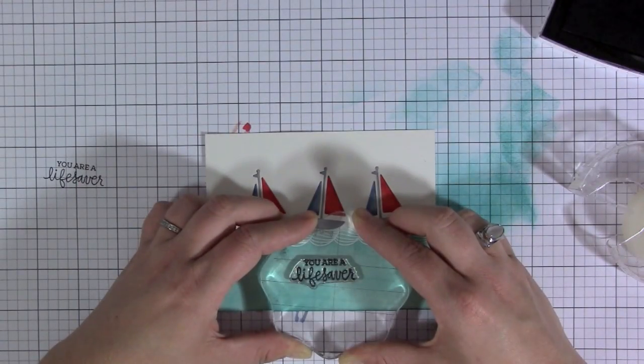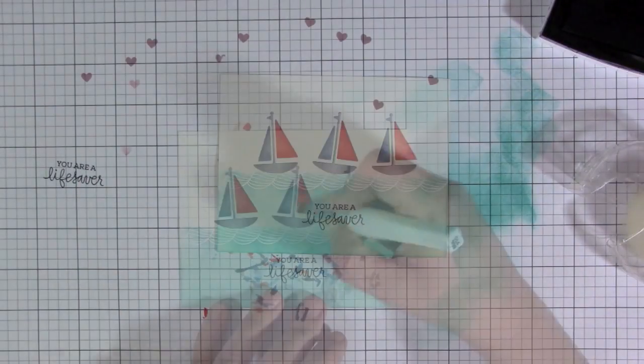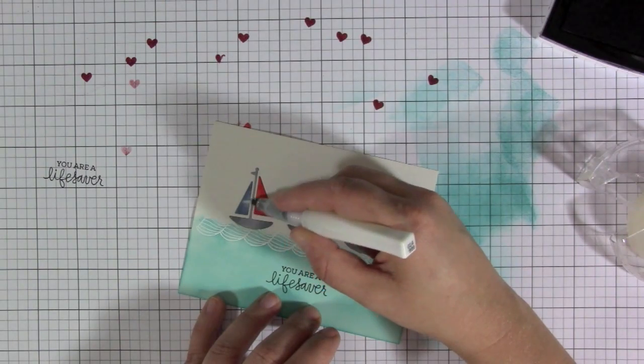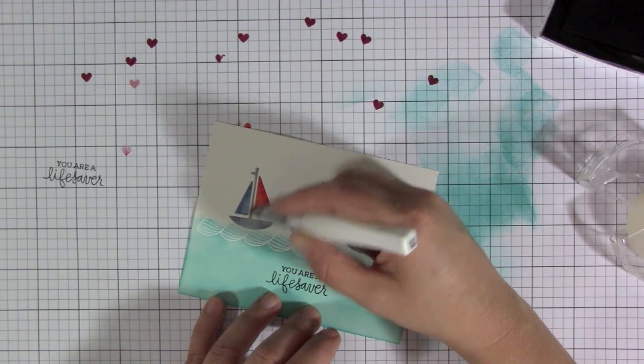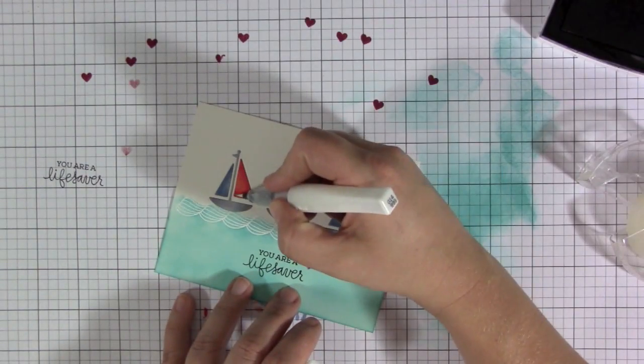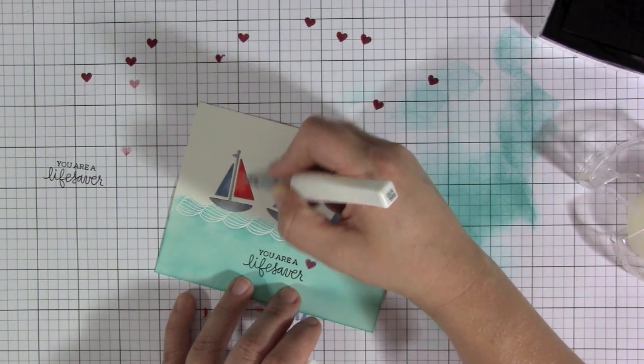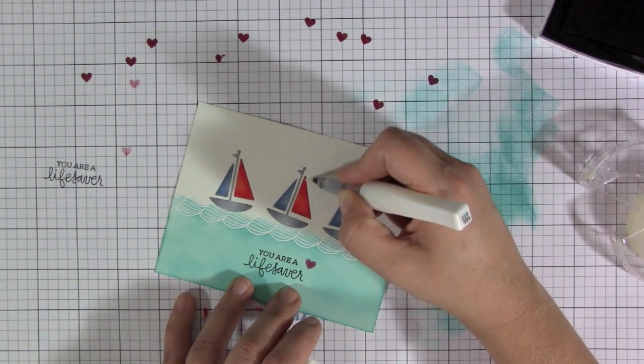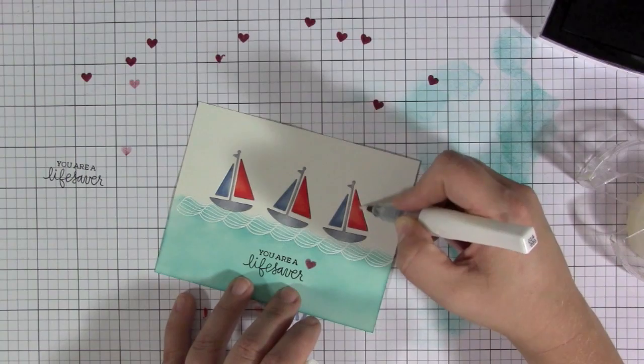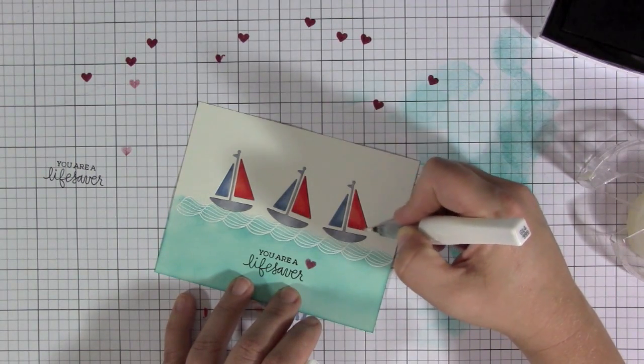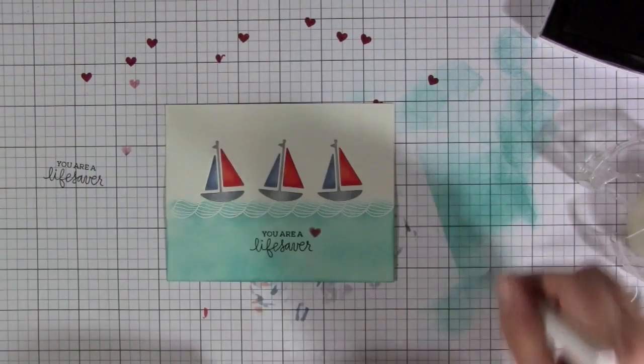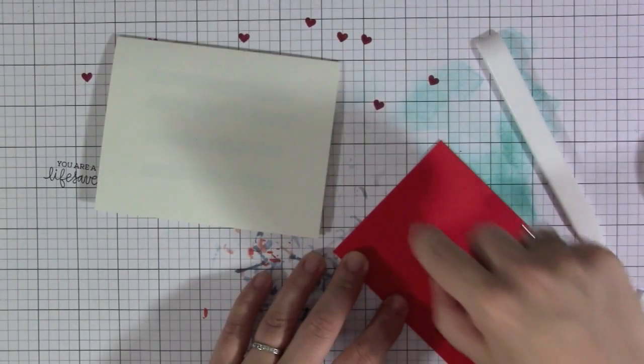The last thing I need to do as far as the stamping goes is give this a sentiment. I used the You Are A Lifesaver sentiment from the stamp set and just stamped it in black ink directly in the water. Then I took my Clear Wink of Stella glitter marker and I'm adding some glitter to the sails on the boats and to the little red heart by the sentiment.